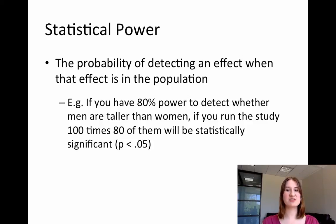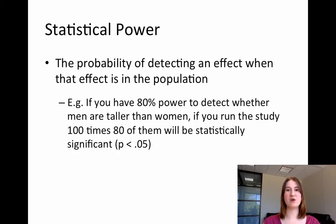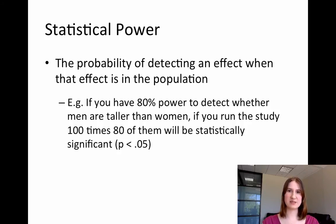For example, if I have 80% power and I run 100 studies — drawing 100 random samples from the world's population — 80 of those 100 studies will come back as statistically significant. In many disciplines, 80% power is considered the lower bounds of acceptable power. 90 or 95% power is more ideal, but anything 80 or above is deemed acceptable.